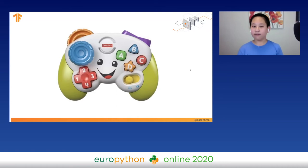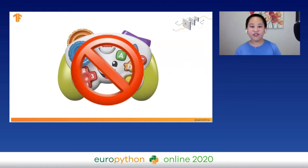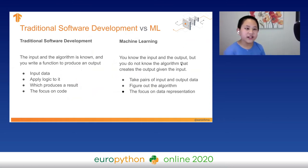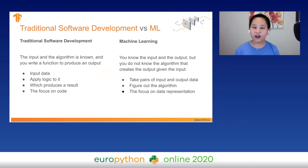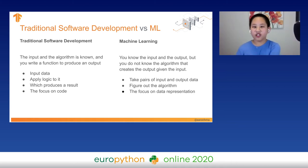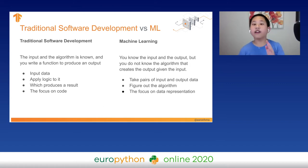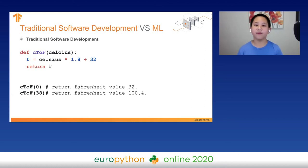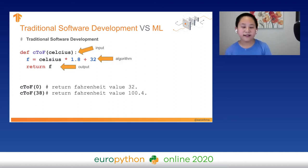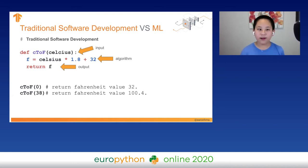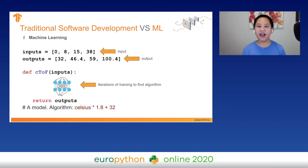In traditional software development, we already know the input and the algorithm and we write a function that gets the output. In machine learning, on the other hand, we put in input-output data pairs and create a model that figures out the algorithm. In machine learning, we focus on how our data is represented, while in traditional software development we focus on our code. For example, solving Celsius to Fahrenheit in traditional software: take the input Celsius and use the algorithm (Celsius × 1.8 + 32) to get the output. But in machine learning, we take pairs of input-output data and through iterations figure out the algorithm.